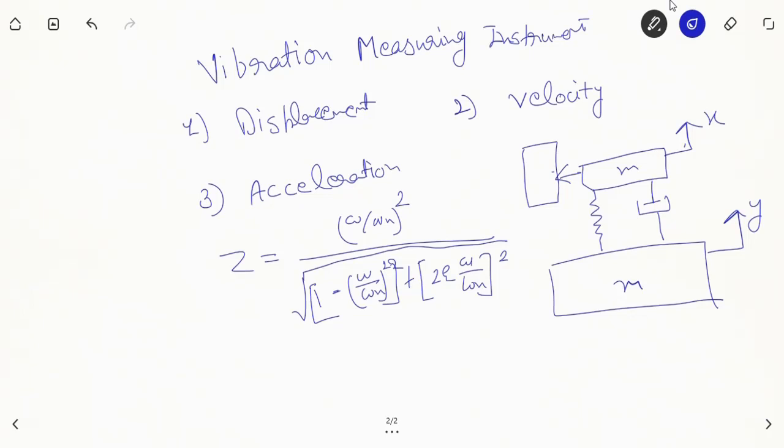This particular body has some vibration displacement, and this body has its own displacement. Essentially we are talking about the relative amplitude as we discussed earlier, which is (omega/omega_n)^2 divided by sqrt[(1-(omega/omega_n)^2)^2 + (2*xi*omega/omega_n)^2]. Our requirement is that each harmonic will be recorded separately and accurately.